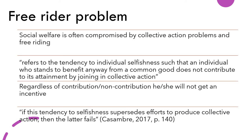There are several problems where we can apply the key ideas of rational choice theory. First is the free rider problem. This problem notes the possible outcomes of selfish decisions made by individuals, especially when aggregated. Social welfare is often compromised by collective action problems and free riding. The free rider problem refers to the tendency of individual selfishness such that an individual who stands to benefit from a common good does not contribute to its attainment by joining in collective action. For example, if there is a consensus in our community that we need to protect the environment, the reality is that not everyone will comply, especially if it's not in law form.